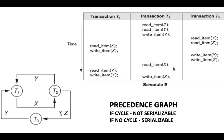We have now looked for all conflicting operations and drawn the precedence graph. The graph is termed a precedence graph. The direction of edges is clear: if write Y in T2 occurs before read Y in T1, the arrow goes from T2 to T1. That is how you determine the direction — the transaction whose operation occurs first points to the one that comes next.